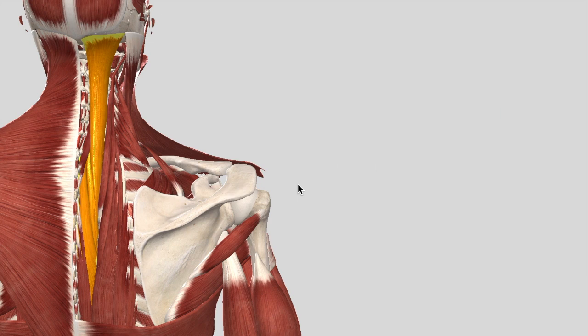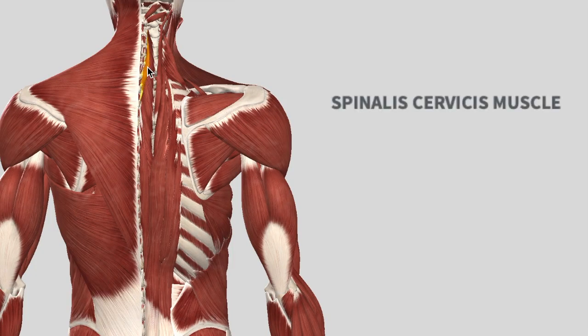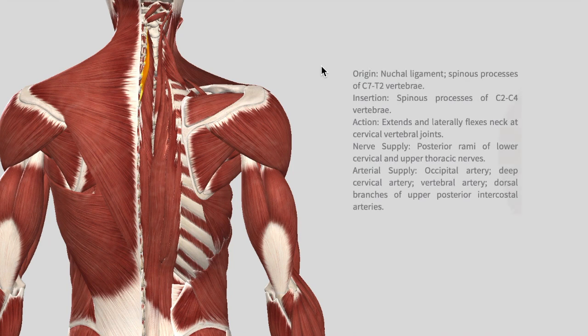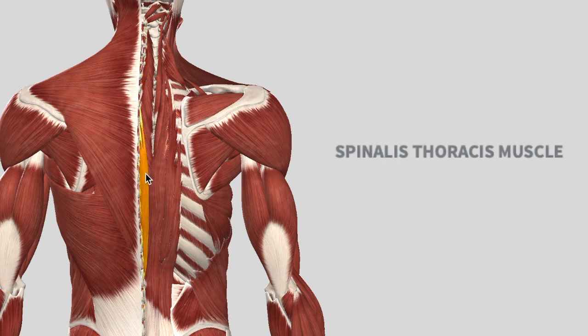Moving on, we have another deeper group known as spinalis cervicis. These are found more medial, closer to the vertebrae. They have an origin on the C7 to T2 vertebrae with insertion in C2 to C4, and the action again is to extend, with nerve supply coming from the lower cervical and upper thoracic nerves. We also have a spinalis thoracis muscle, so in this group we have two: cervicis and thoracis.